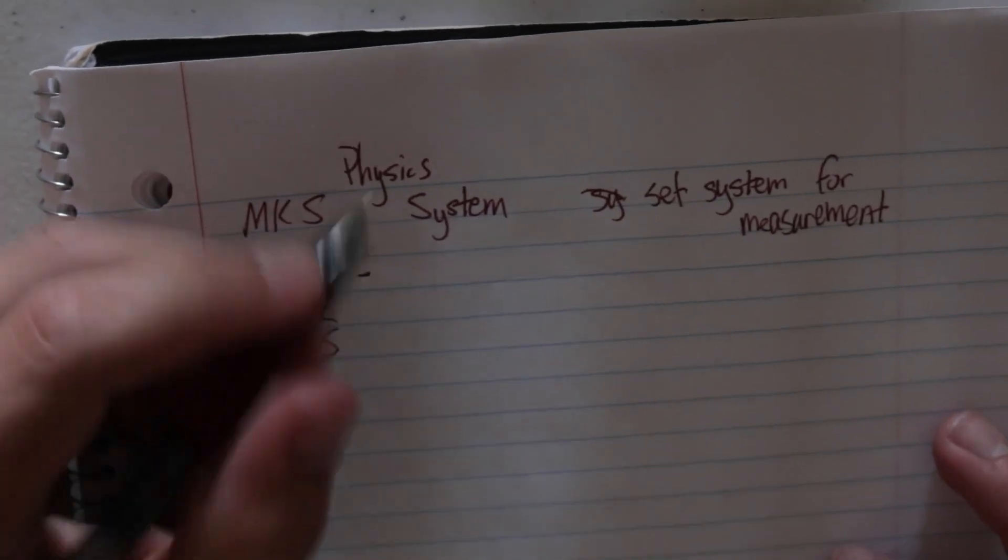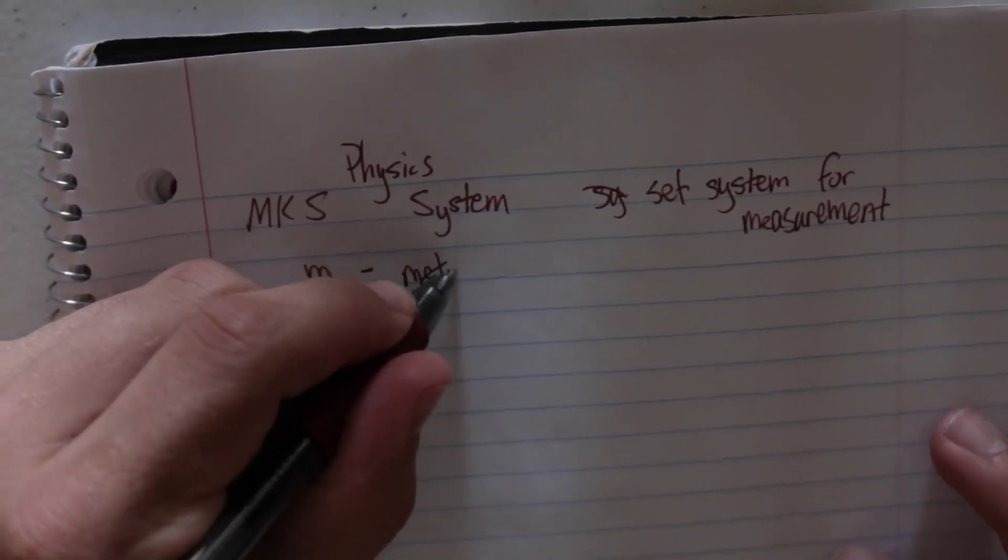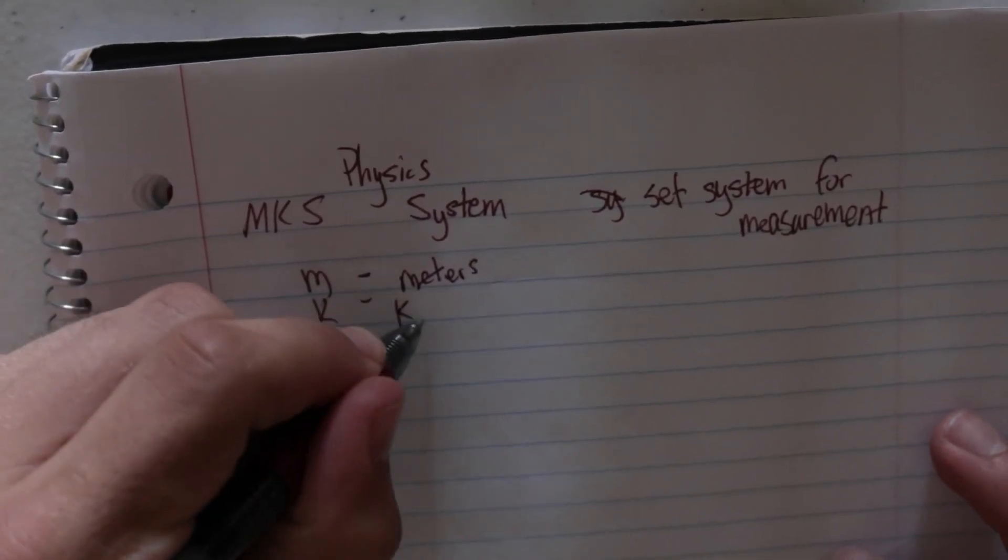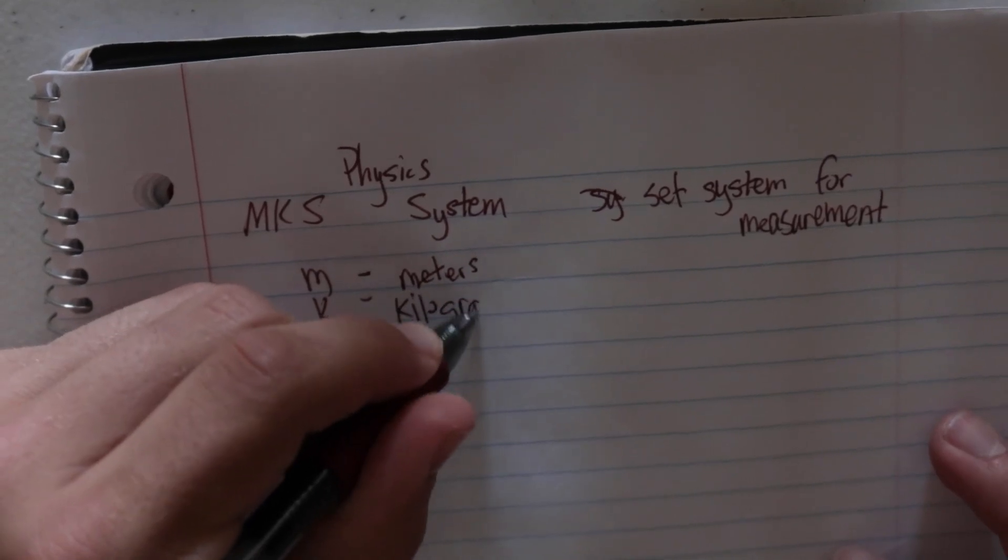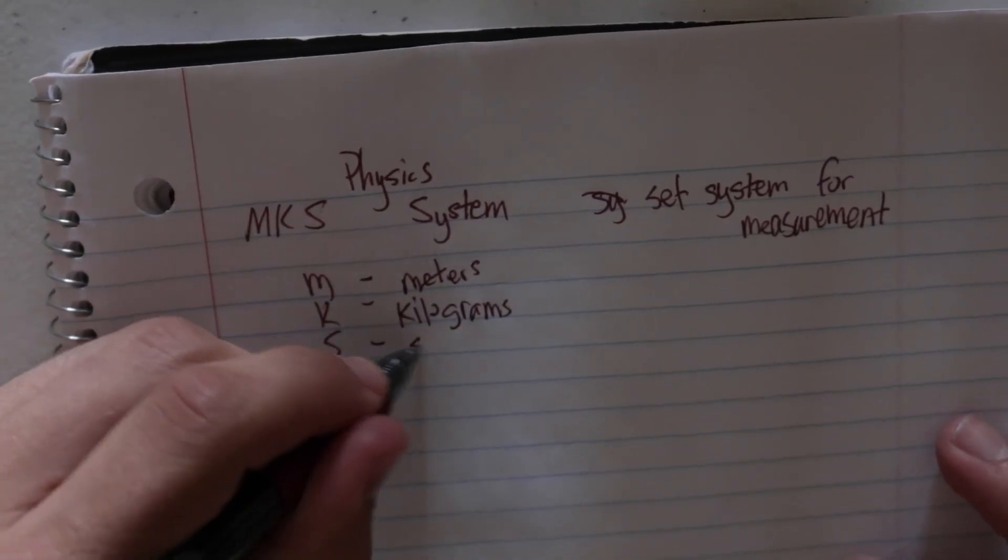So M is standing for meters, K is standing for kilograms, and S is standing for seconds.